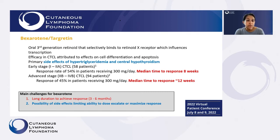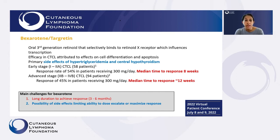Bexarotene does have a good response rate — the response rates for most of our treatments are around 40 to 50 percent, but it can take some time to see that response, between about two to three months up to six months to really get a full response. The side effects, namely the cholesterol and thyroid effects, can limit our ability to increase the dose of bexarotene to maximize the response of the skin.